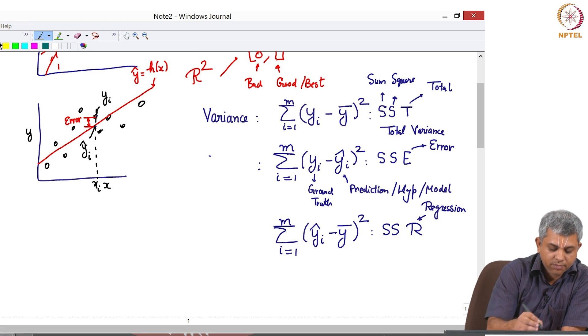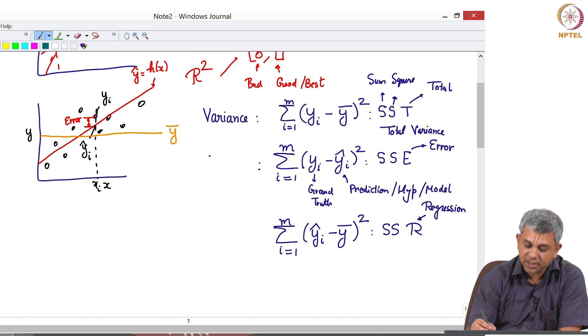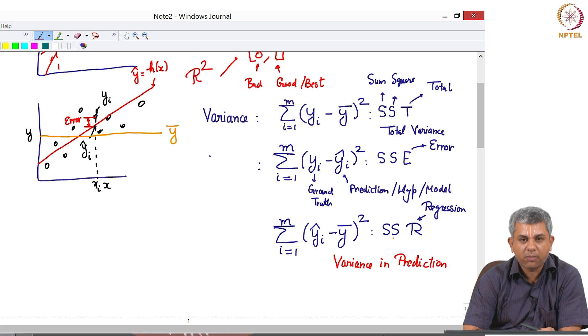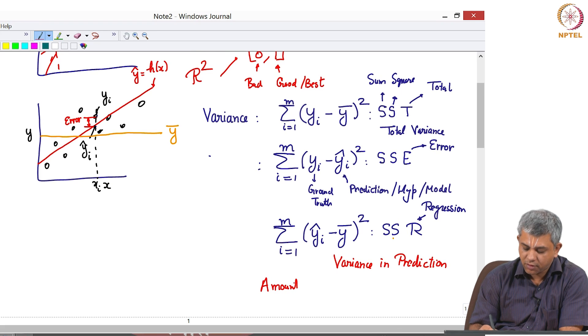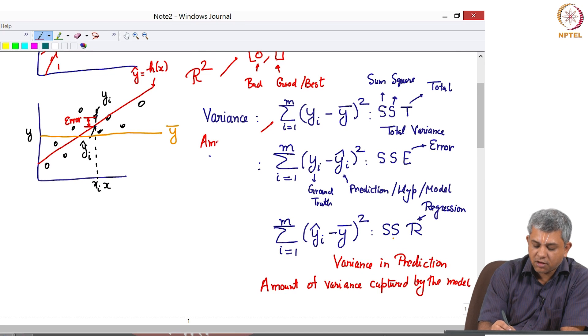I will name this term and then explain what it physically represents. Once again SS is sum squared, R stands for regression. Now what does this denote? Suppose I mark Y bar here. Just like variance told you how much does yi vary from Y bar, this term SSR or sum square regression tells you how much does your prediction vary from Y bar. So this is the variance in prediction.